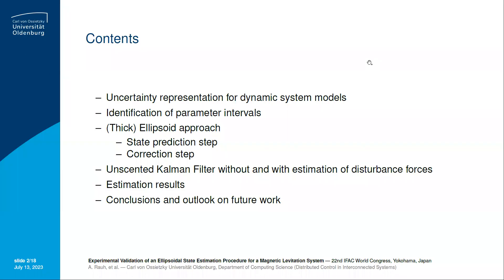During this presentation, we will firstly deal with uncertainty representations for dynamic system models, especially with a representation that considers bounded error representations. Thereafter, we'll deal with experimental parameter identification using this bounded error representation for magnetic levitation systems. Especially, we'll derive an ellipsoidal approach that allows us to perform predictor-corrector state estimation procedures, and this corresponding procedure will then finally be compared with an unscented Kalman filter without and with estimation of disturbance forces for the benchmark scenario. Finally, we'll come to conclusions and an outlook on future work.